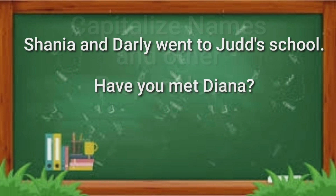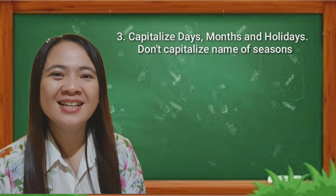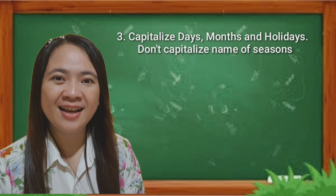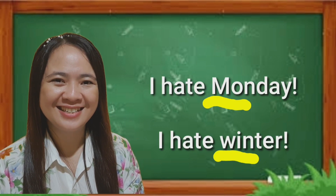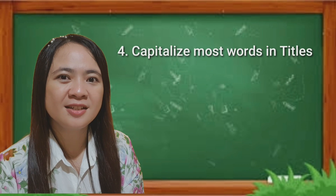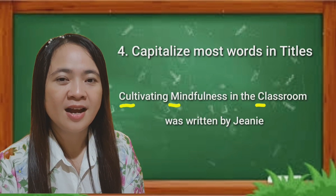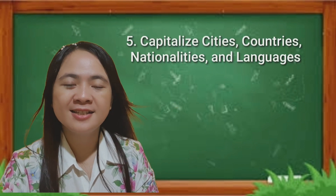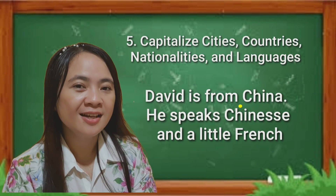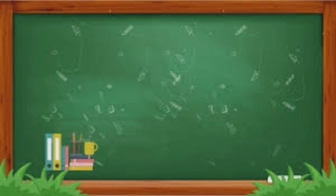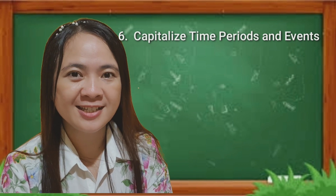Rule number three: capitalize names of days, months, and holidays, but don't capitalize the names of seasons. Rule number four: capitalize most words in titles. Rule number five: capitalize names of cities, countries, nationalities, and languages. Rule number six: capitalize time periods and events.